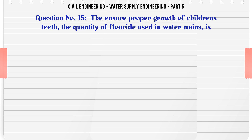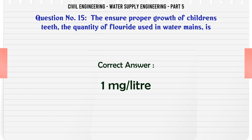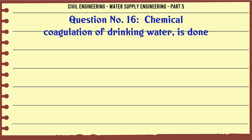The quantity of fluoride used in water mains to ensure proper growth of children's teeth is: A. 1 mg/litre, B. 2 mg/litre, C. 3 mg/litre, D. 4 mg/litre. The correct answer is 1 mg/litre.